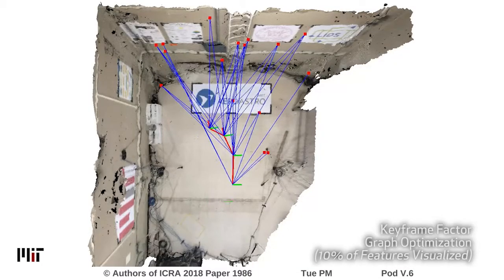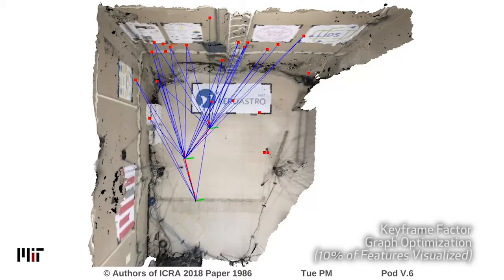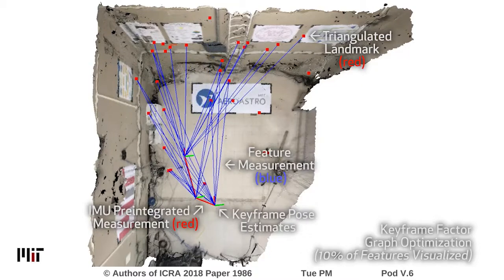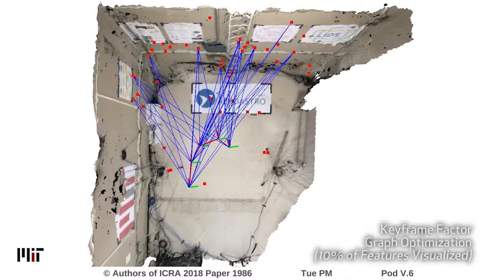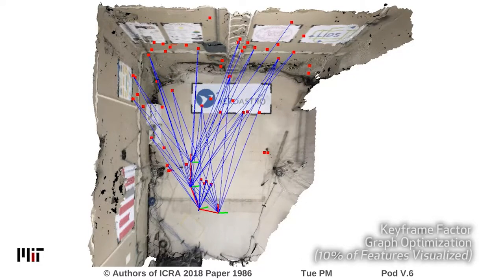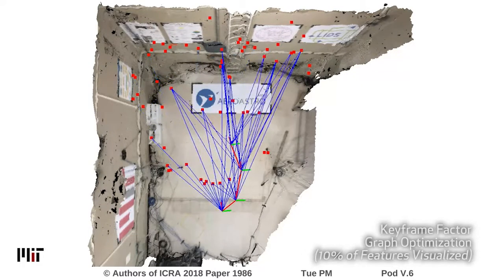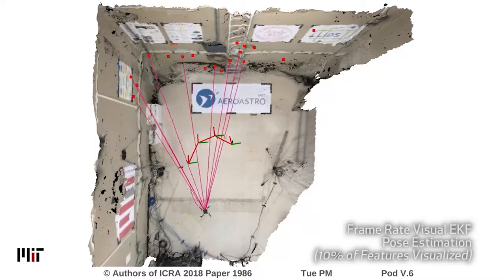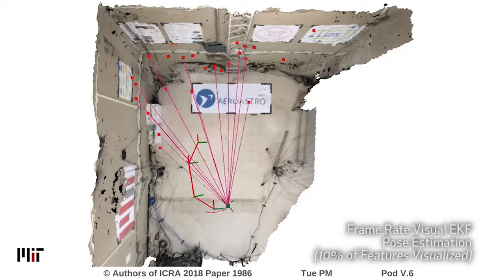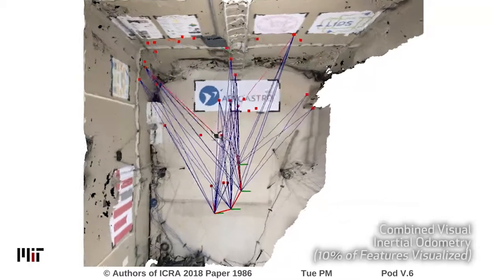Our visual inertial odometry algorithm has two layers. The first is a keyframe based fixed lag smoother which uses IMU and camera measurements to optimize for the pose of the drone, the 3D location of visual landmarks, and the bias of the IMU. The second layer is an extended Kalman filter which uses the smoother's estimate of 3D landmark locations as a map and performs frame rate visual updates against it to be used in the control loop.